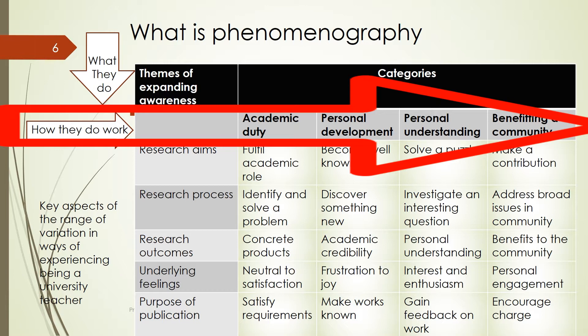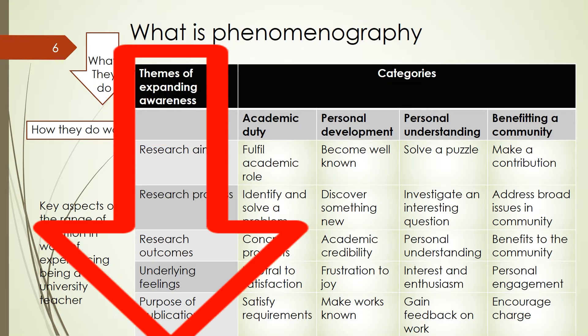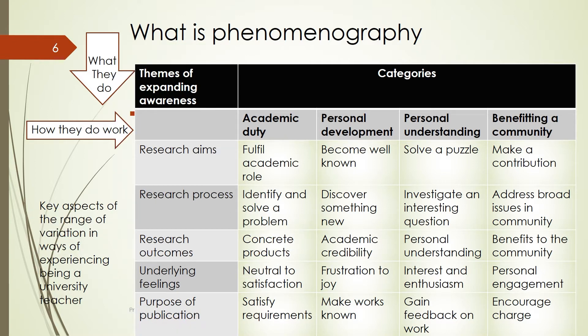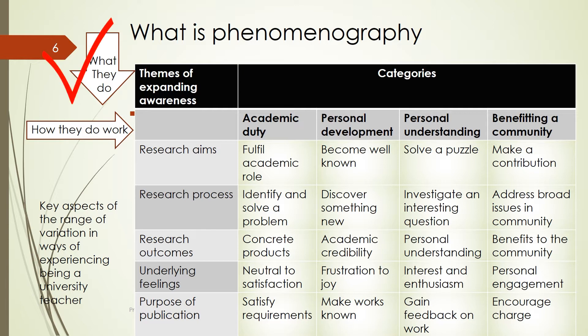We can also come up with categories relating to what university teachers do: research aims, research process, research outcomes, underlying feelings, and purpose of publication. Based on categories developed by analysing data of how university teachers work and what university teachers do, we can generate meanings.